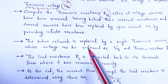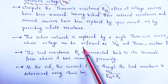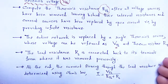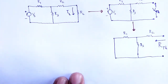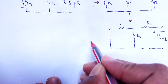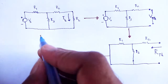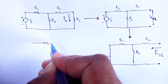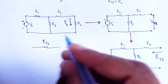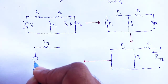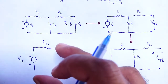The entire network is replaced by a single Thevenin source. The total Thevenin source, whose voltage is referred to as Vts, and the Thevenin resistance is known as Rts. Now we take the circuit — the total voltage is named as Vts, Thevenin voltage, with Thevenin resistance in series.